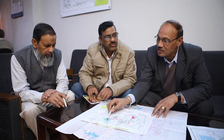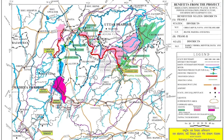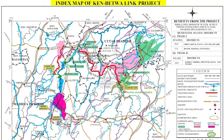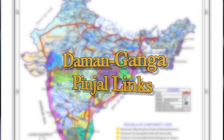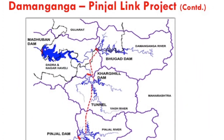Total employment generation will be over 225 lakh man-days annually in the command area. Most statutory clearances have been accorded and forest clearance is at an advanced stage. Implementation of the project is likely to be started soon.